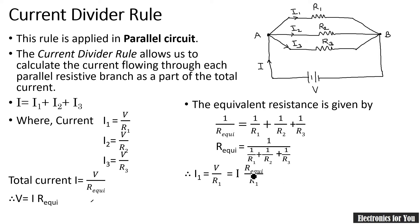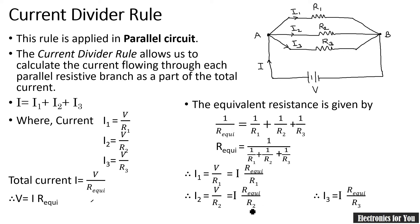Where R-equivalent is this term. I2 will be equal to V upon R2, which is I times R-equivalent upon R2. Similarly, I3 equals I times R-equivalent upon R3. This is the current divider rule, where you can calculate individual currents I1, I2, and I3 by using the total current I, the equivalent resistance, and the individual resistances.